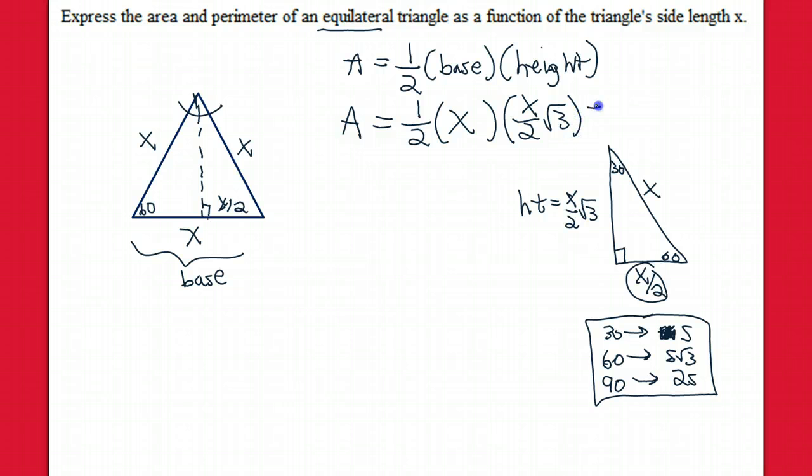Putting this all together, we have an x and another x. That would be x squared. And then we have a 2 and another 2 in the denominator. That's over 4. And there's a root 3 up top. That is the area of the triangle as a function of the triangle's side length x.